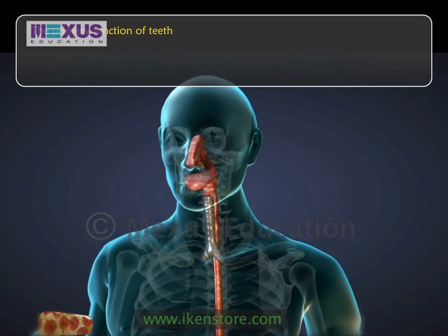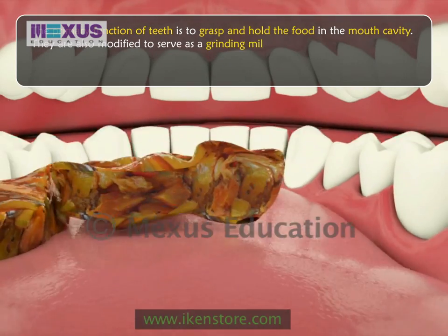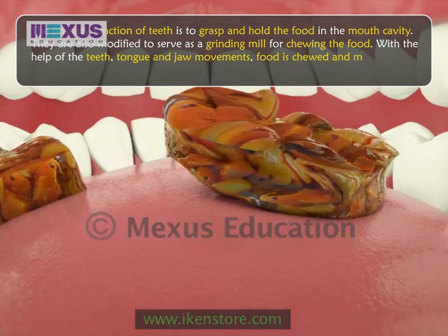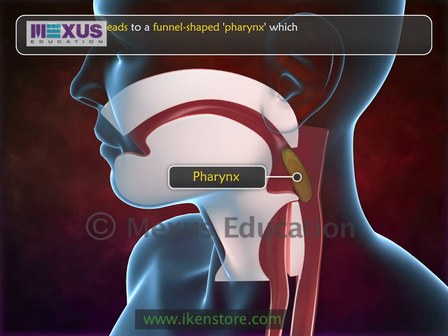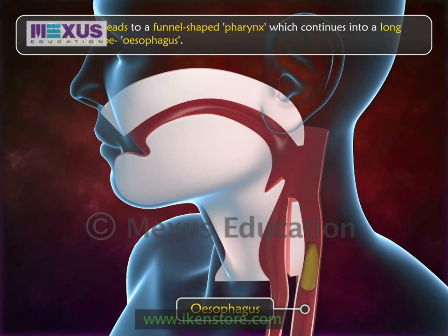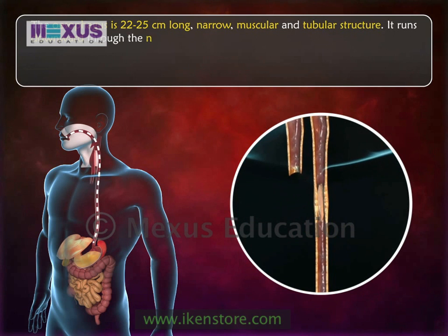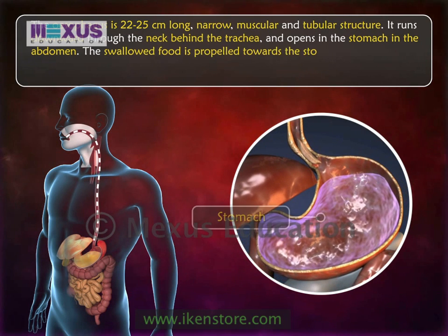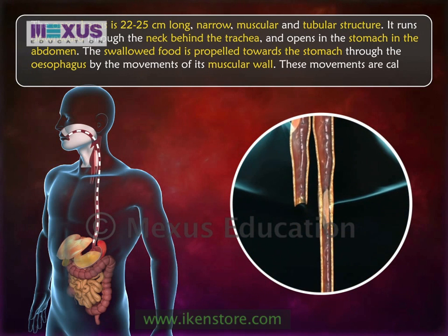There is a pulp cavity within the dentin that contains a mass of cells, blood vessels, and nerves. The primary function of teeth is to grasp and hold food in the mouth cavity; they are also modified to serve as a grinding mill for chewing. With the help of teeth, tongue, and jaw movements, food is chewed and mixed with saliva. The mouth leads to a funnel-shaped pharynx, which continues into the esophagus — a 22 to 25 centimeter long narrow muscular tube running downward through the neck behind the trachea and opening into the stomach. Swallowed food is propelled toward the stomach by muscular wall movements called peristalsis.